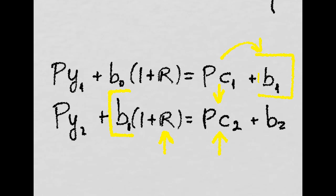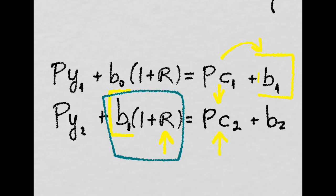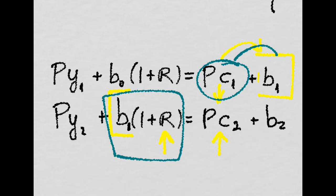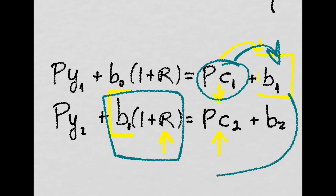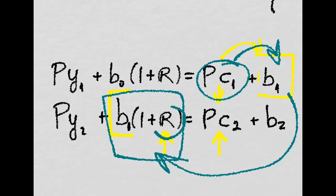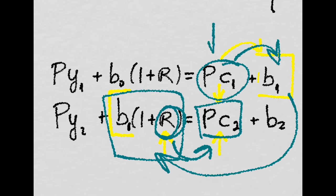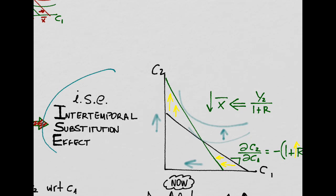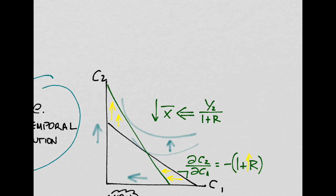If you lend more, you will receive more money because the interest rate is higher. So at the present time, you will be willing to consume a little bit less and save a little bit more in the form of bonds, which will become your sources of funds in the next period. Since they are paid a little bit more because of the increase in the interest rate, you will be able to consume more in the future. You are shifting consumption to the future, and you save more today to be able to do that. That is what we call the inter-temporal substitution effect.